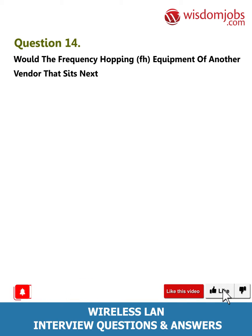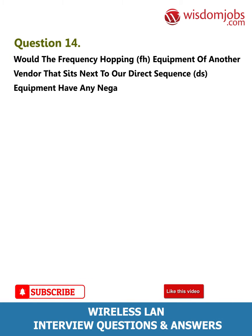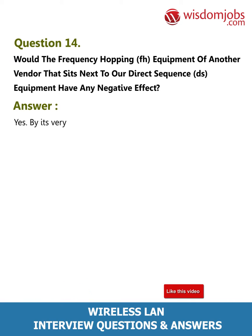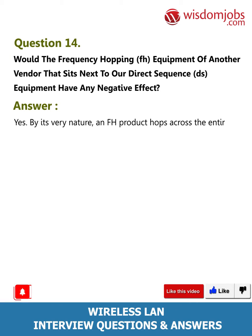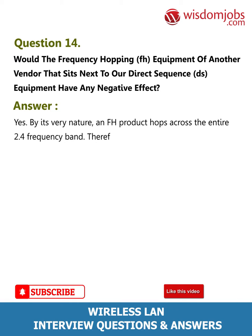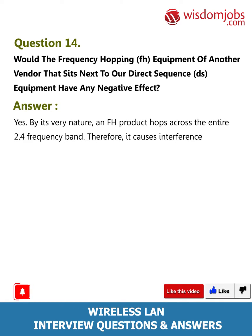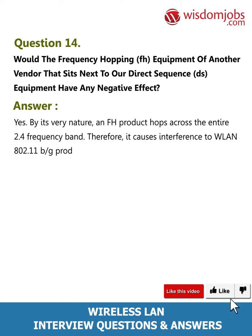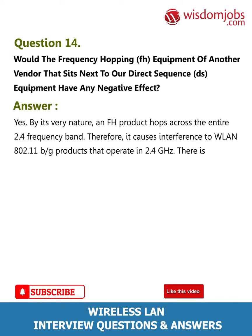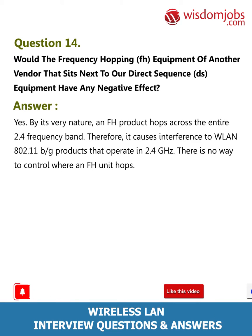Question 14: Would frequency hopping (FH) equipment from another vendor sitting next to our direct sequence (DS) equipment have any negative effect? Answer: Yes. By its very nature, an FH product hops across the entire 2.4 GHz frequency band, therefore it causes interference to WLAN 802.11b/g products that operate in 2.4 GHz. There is no way to control where an FH unit hops.